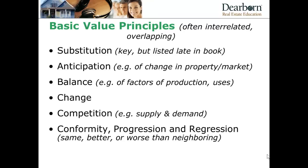Substitution is the most important of these principles. Substitution says if a potential buyer is looking at two homes that appear identical and home A is priced at $400,000 but home B is priced at $350,000, the buyer can easily substitute B for A and will want to buy B — they won't pay more than they have to. If there are a number of homes on the market, the buyer will pay the least he can to get the features that are important to him.